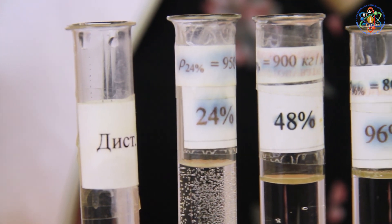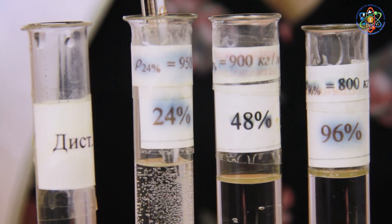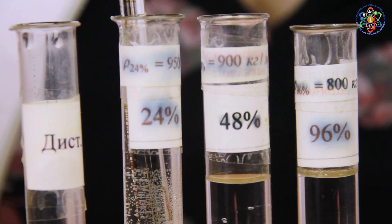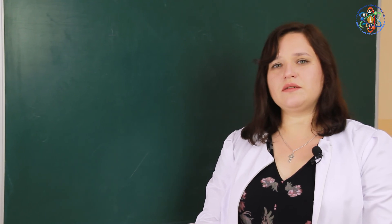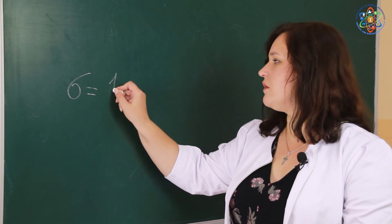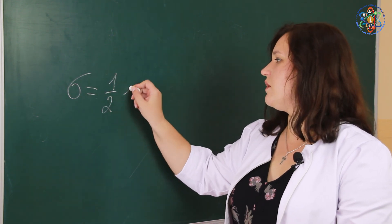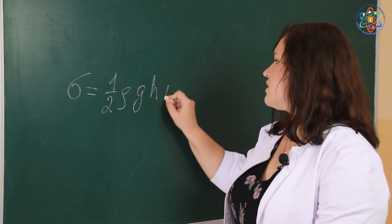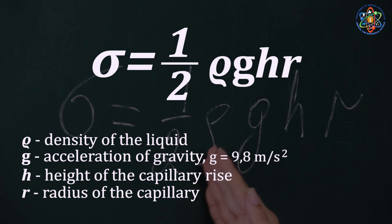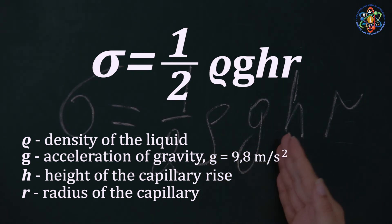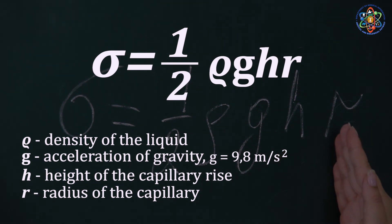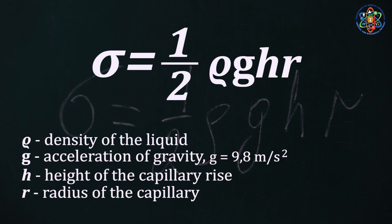We repeat the measurements for the remaining three solutions. We identify the surface tension factor for all the liquids using the formula σ = (1/2) × ρ × g × h × r, where ρ is the density of the liquid, g is the acceleration of gravity, h is the height of the capillary rise, and r is the radius of the capillary.